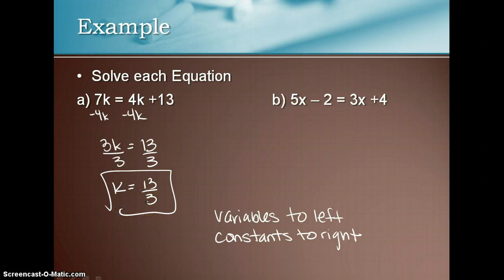For part b, 5x minus 2 equals 3x plus 4. We're going to subtract 3x from both sides to get that variable to the left. That gives you 2x minus 2 equals 4.